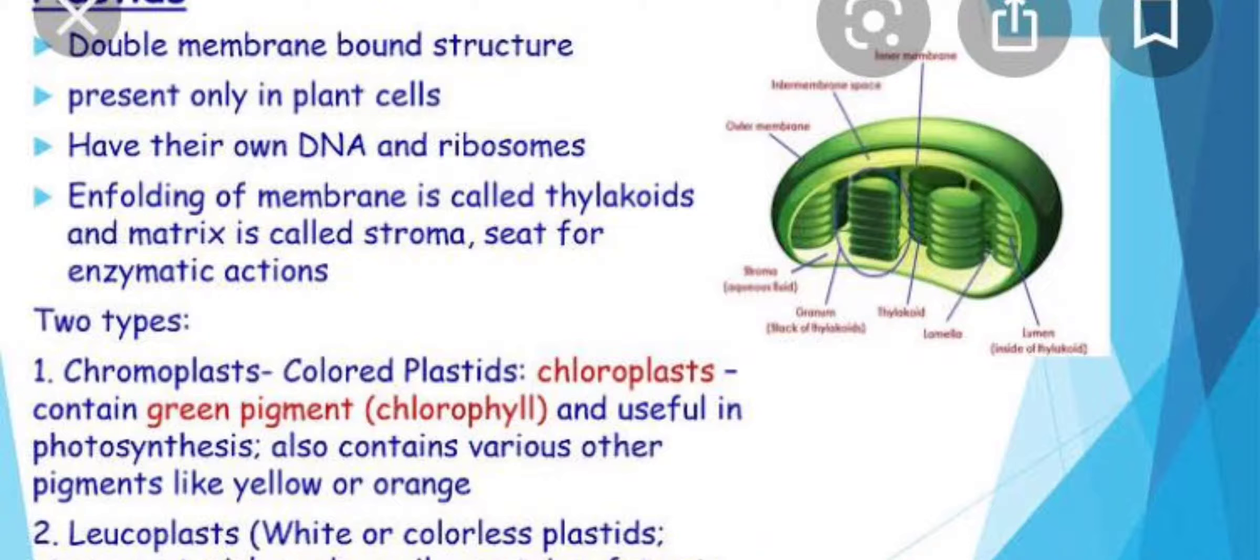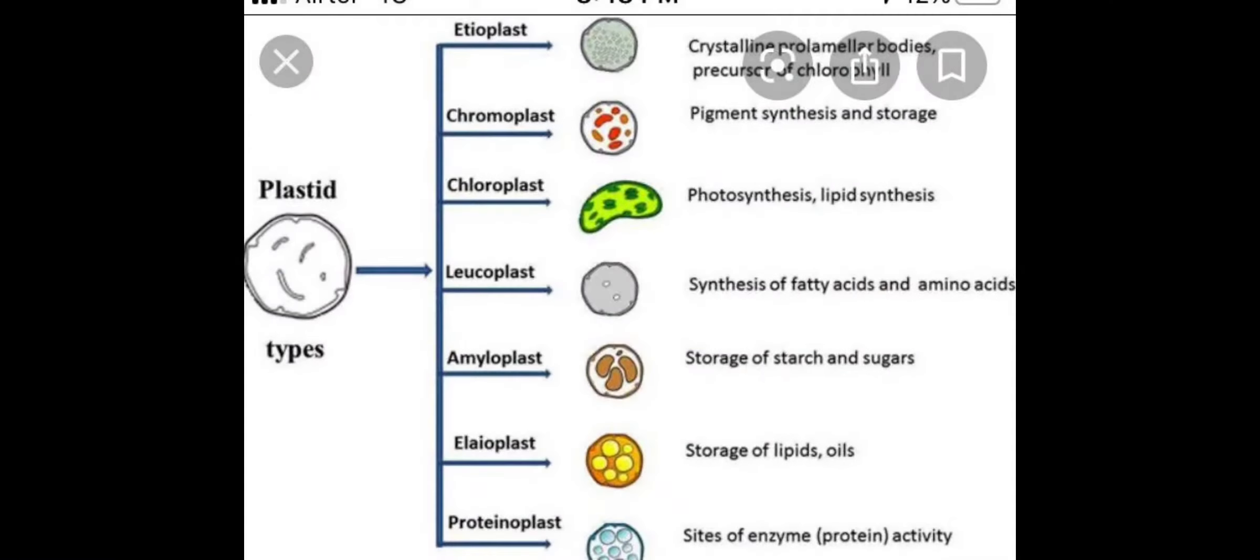So plastids are basically many types. Few are there to store the material like starch, lipids, and proteins, and few are the colored plastids which provide color to things. Here is a chart that gives you the elaborate description about the different types of plastids along with the storage material that they store in them. Note them down in your copy.